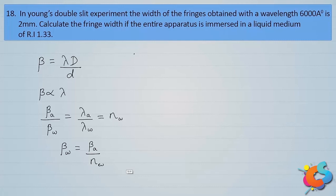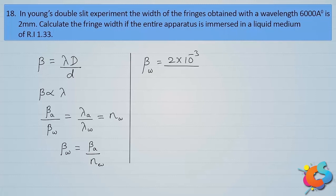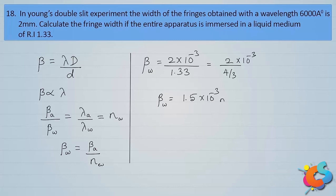Using this relation: β_water = β_air / μ = 2×10⁻³ / 1.33. Writing 1.33 as 4/3 for simplification: β_water = 2×10⁻³ × (3/4) = 6/4 × 10⁻³ = 1.5×10⁻³ m = 1.5 millimeters. The fringe width inside the liquid is 1.5 millimeters.